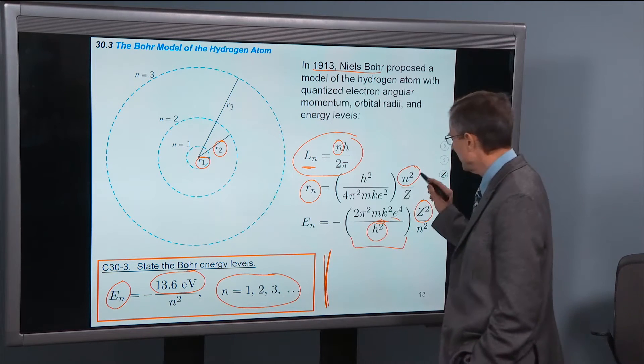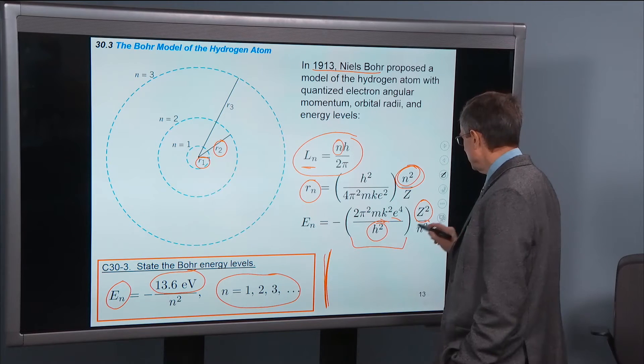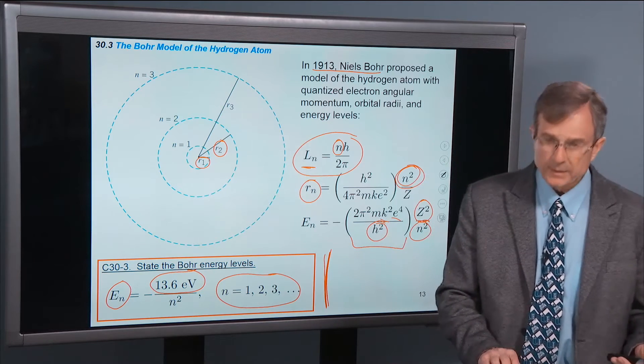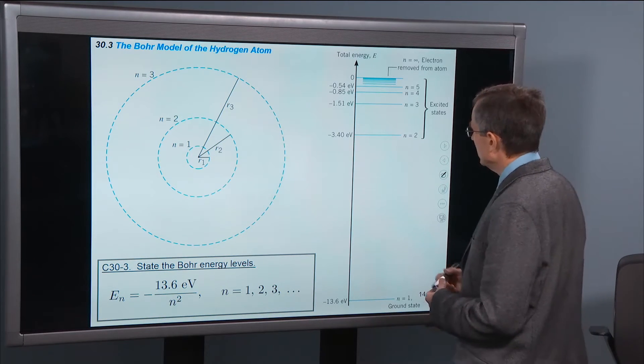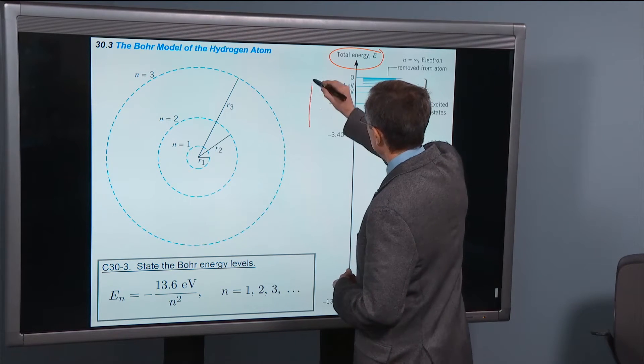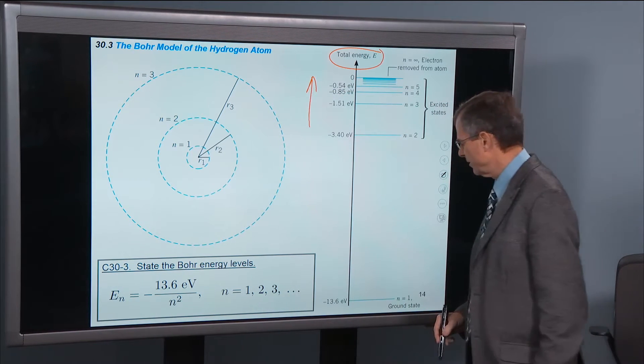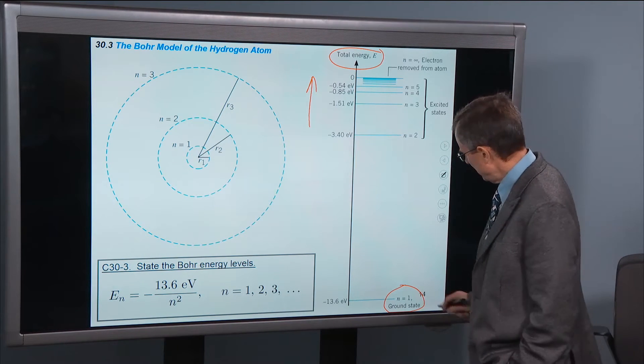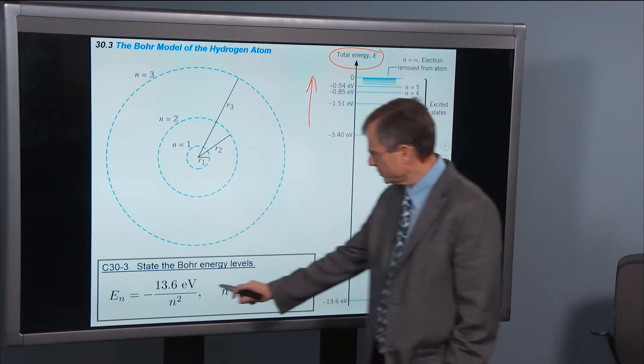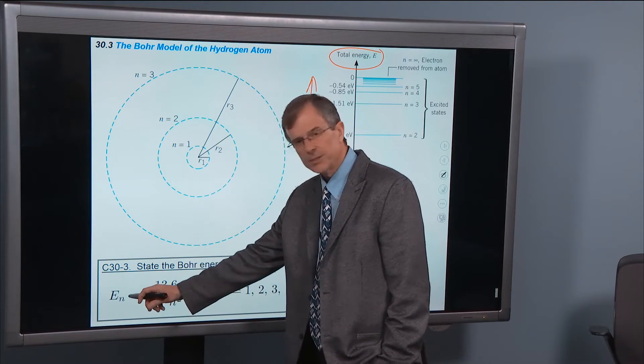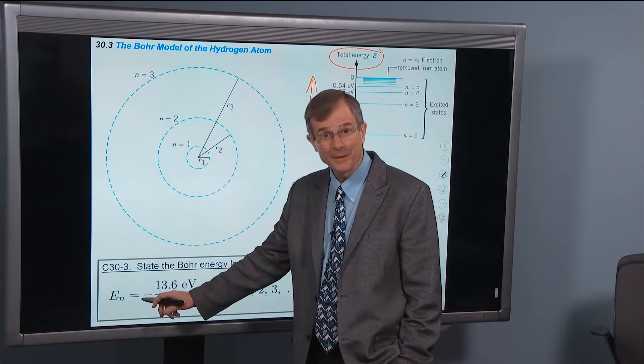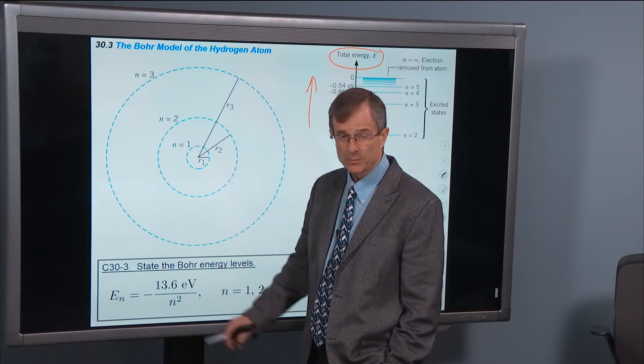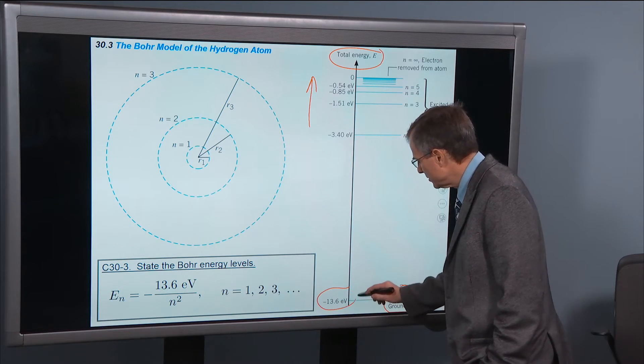So these energy levels look like this if you plot them with energy increasing in the upward direction. So these are higher and higher energies. For n equals 1, that's called the ground state. And that one, if you plug in n equals 1 into here, then obviously the energy of that orbit, or that level we call it, is minus 13.6 eV divided by 1 squared, which is just 1. So this is called the ground state energy level.